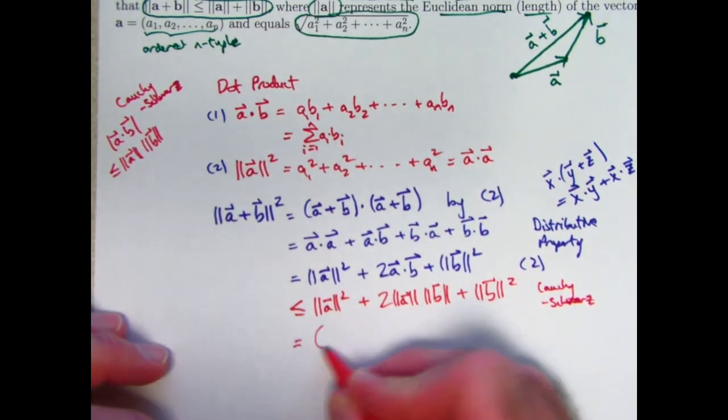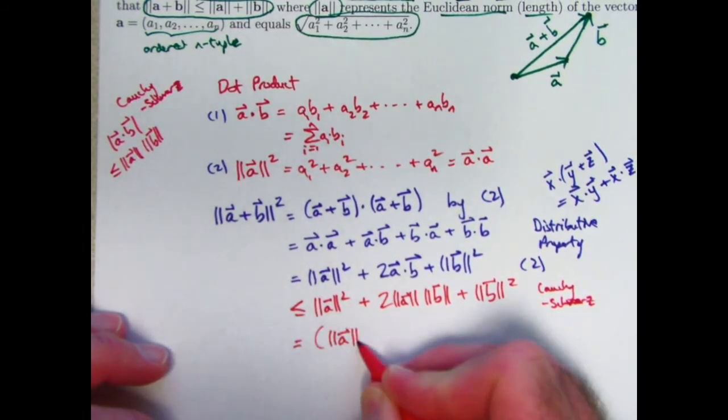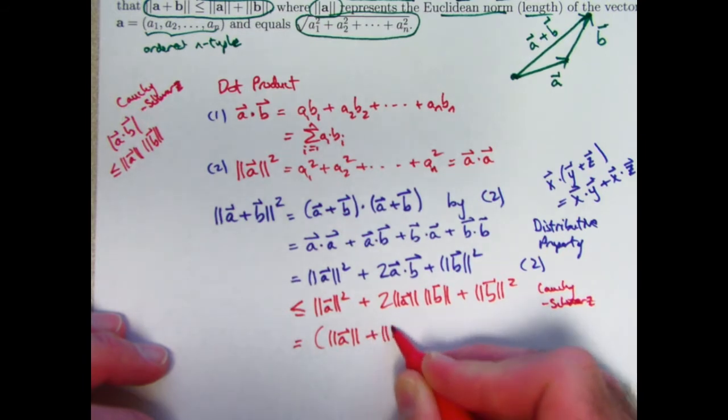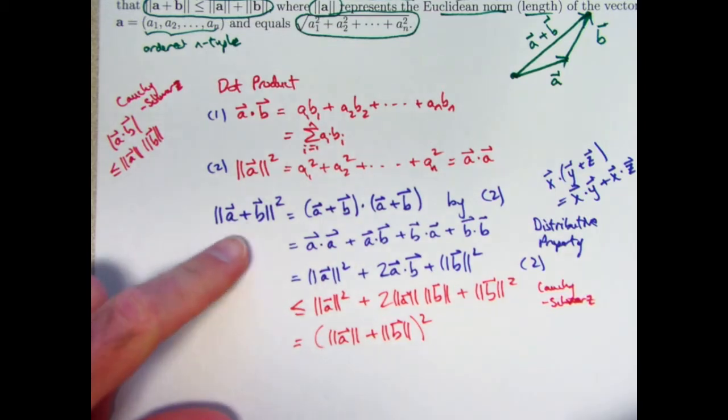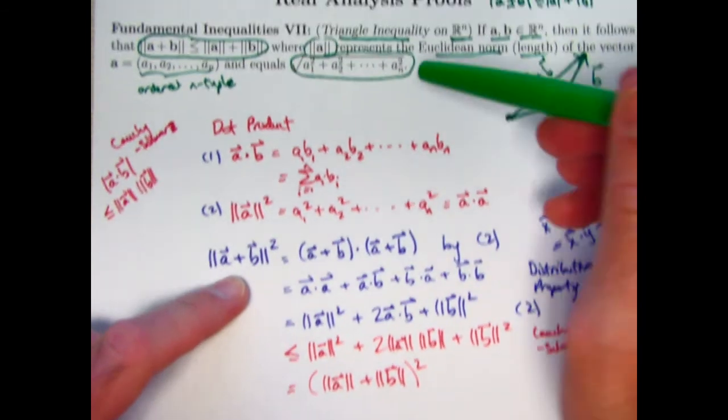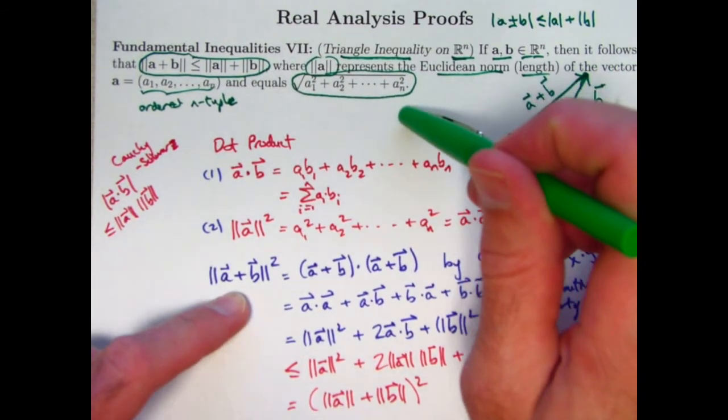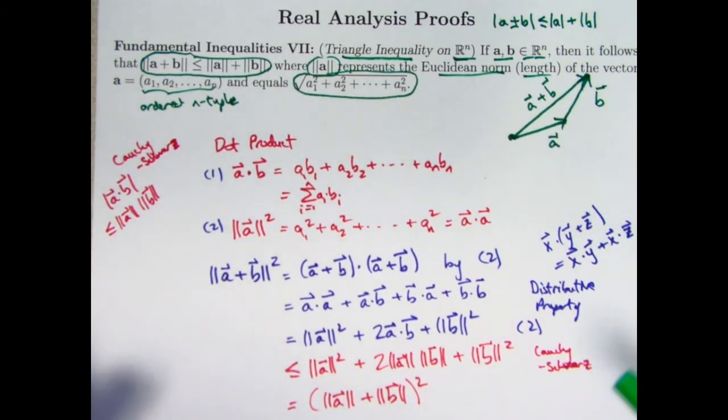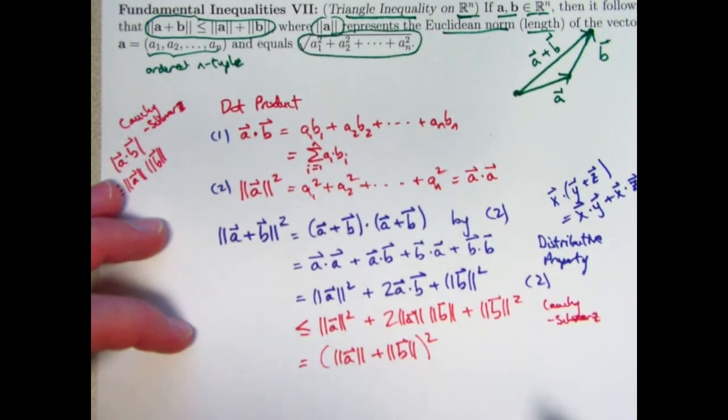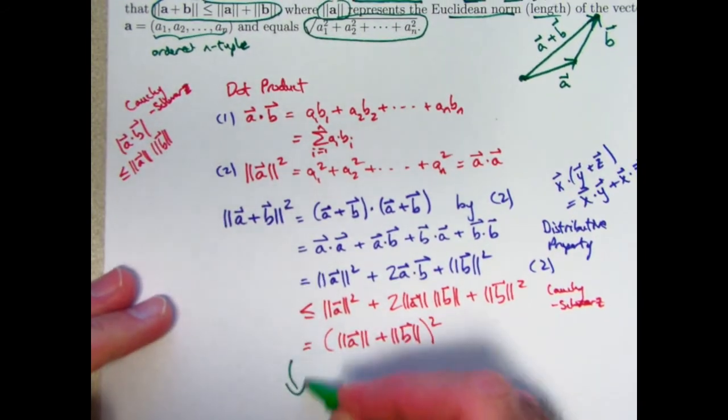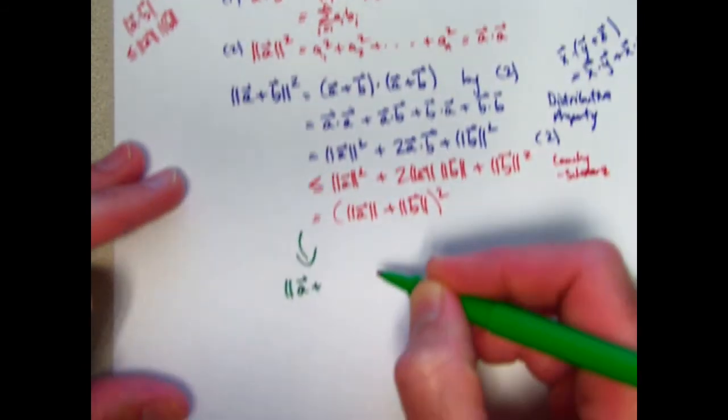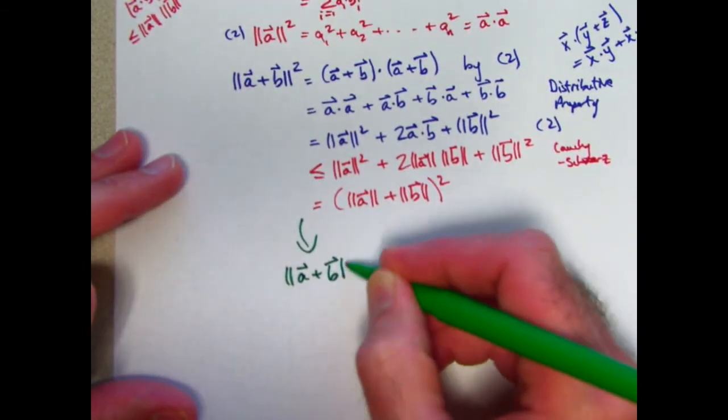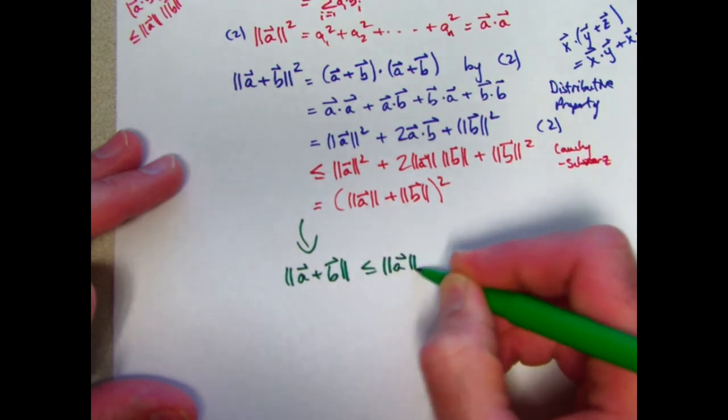But this thing is the same as the square of the sum of the norms of a and b. And the triangle inequality now follows by taking the square root of both sides and recalling that the norm of any vector, being the square root of a sum of squares, is a non-negative number so I don't have to worry about the negative square root or something. Take square roots and you get the triangle inequality as we were hoping to get.